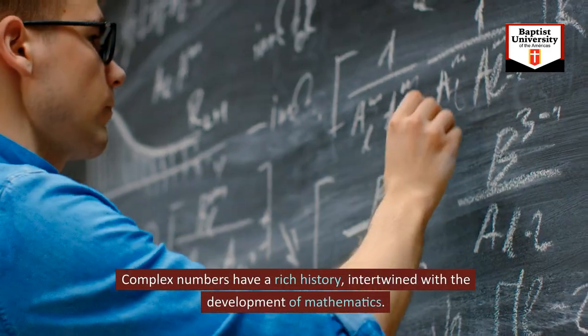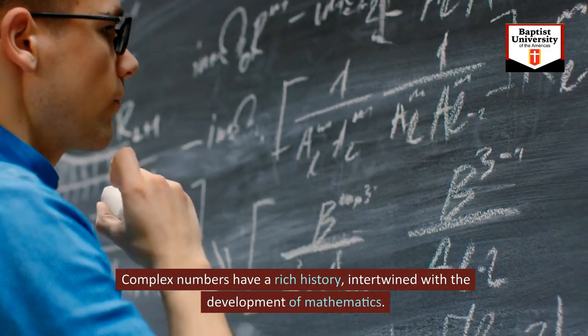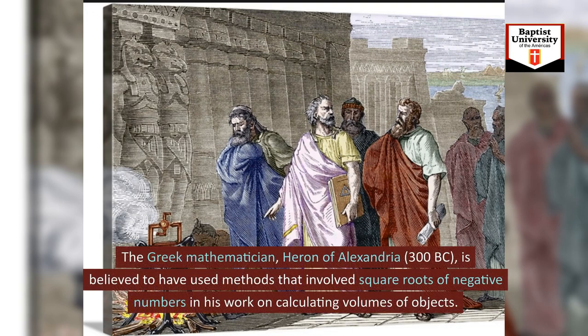Complex numbers have a rich history intertwined with the development of mathematics. The Greek mathematician Heron of Alexandria, 300 BC, is believed to have used methods that involved square roots of negative numbers in his work on calculating volumes of objects.